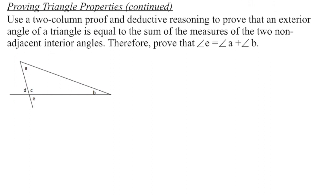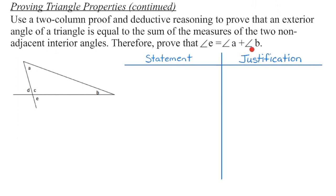Can we prove that an exterior angle of a triangle is equal to the sum of the measures of the other two non-adjacent interior angles? There are multiple ways to go about this. In this diagram, we have exterior angle E and exterior angle D. We're going to use angle E. So angle E is our exterior angle, angle C is the adjacent interior angle, and we're taking the two non-adjacent angles A and B. We need to show that A plus B equals E. There are no parallel lines in this diagram, so those angle relationships don't apply here.